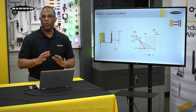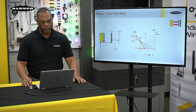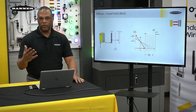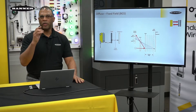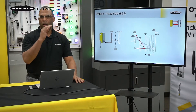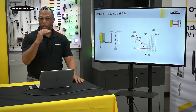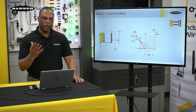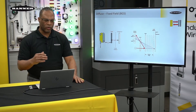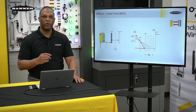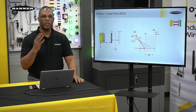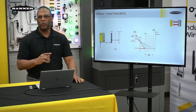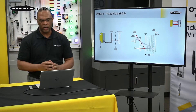Now, there is a way to get around this background issue. We have a variation of diffuse. Up until now, every sensor had one emitter and one receiver. What we've done with our fixed field sensors is we have one emitter and two receivers. That second receiver gives us cutoff because we are using it in triangulation.